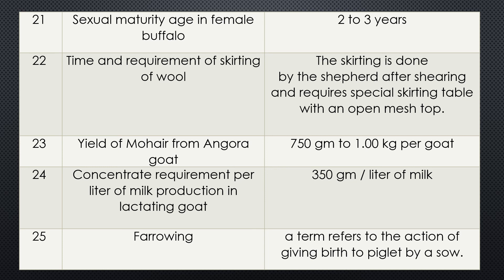Question twenty four: Concentrate requirement per litre of milk production in lactating goat. Answer is 350 grams per litre of milk.